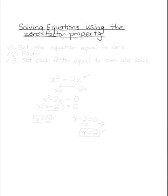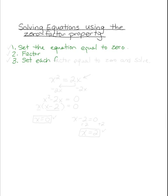The zero factor property, or zero product property as it's sometimes called, is used to solve many polynomial equations. I like to call it the zero factor property because it reminds me of the first two rules for using the property, which are: one, to set the equation equal to zero — that's the zero part — and two, to factor, hence zero factor. The third step is to set each factor equal to zero and solve.